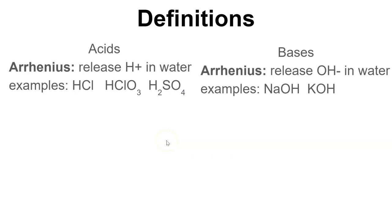So first of all, what are acids and bases? Acids release hydrogen ions in water, and examples of this would be HCl, HClO3, H2SO4. We should recognize that SO4 and ClO3 are polyatomic ions that we learned about in earlier units. A base releases hydroxide anions in water, and examples of that would be NaOH and KOH.